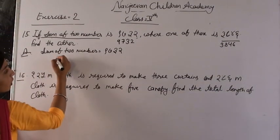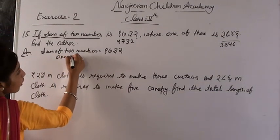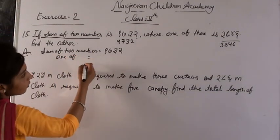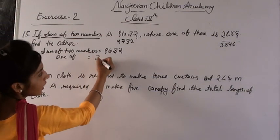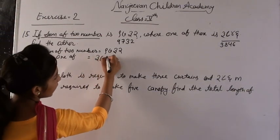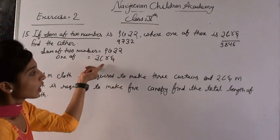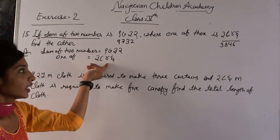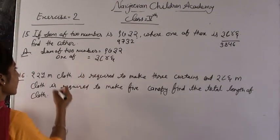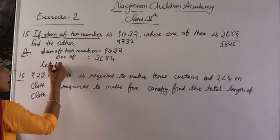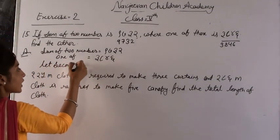And next, one of them. How do you see this? 3,846. And next, let second number.